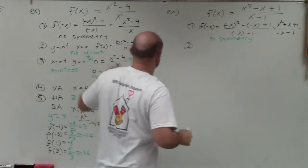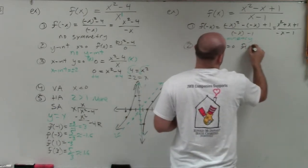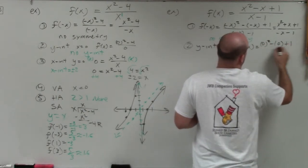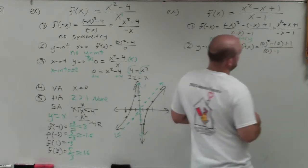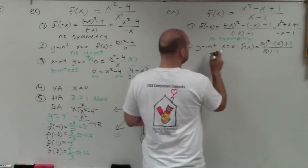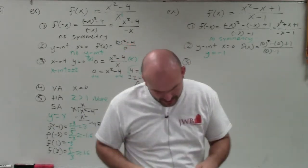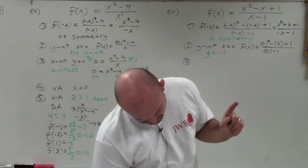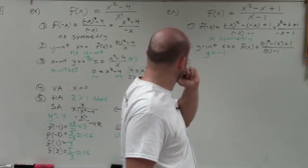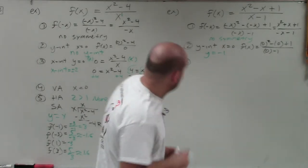Step two is to identify the y-intercept. Remember, the y-intercept is when x equals 0. Plugging 0 in for x: I have 0 squared minus 0 plus 1, all over 0 minus 1. That gives positive 1 over negative 1, which equals negative 1. So my y-intercept is y equals negative 1.